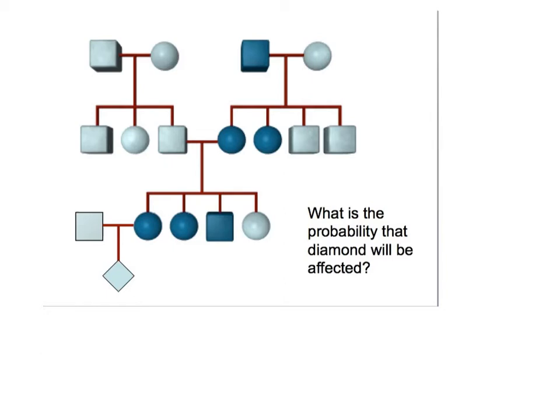Okay guys, here's another pedigree. This time we want to know what is the probability that this diamond-shaped child — so not giving it either sex — is affected. That's our question; we're looking for probability. We're not told whether it's dominant or recessive, and if we scan this quickly, I think it could be either. I don't think there's any telltale sign of yes or no. So let's work it as dominant first, and then as recessive, and see if that works. Very tricky.